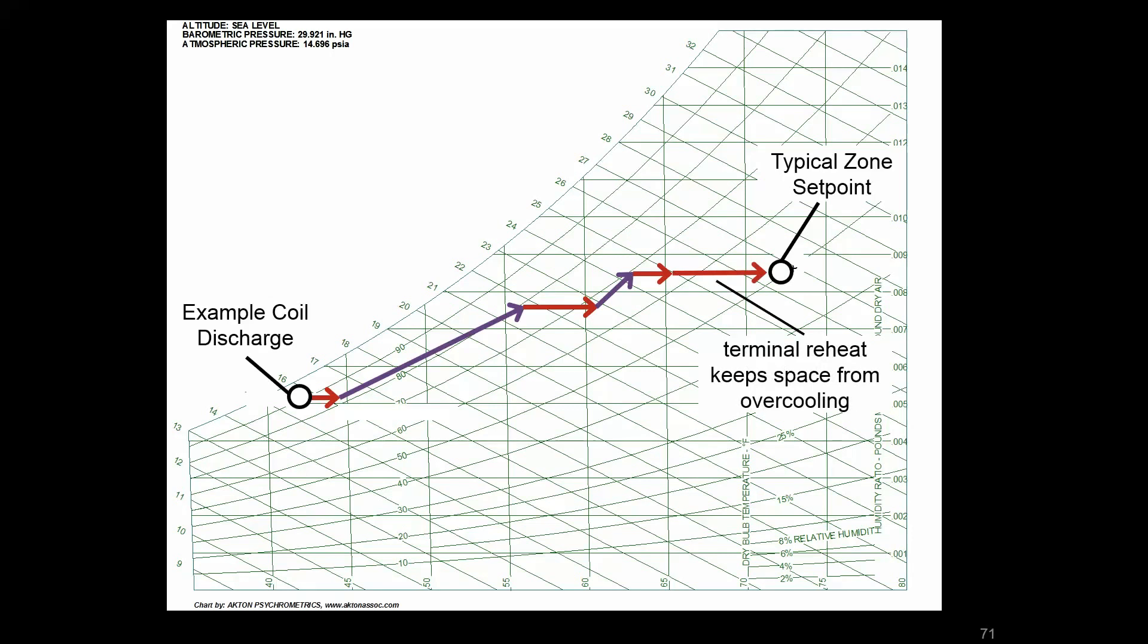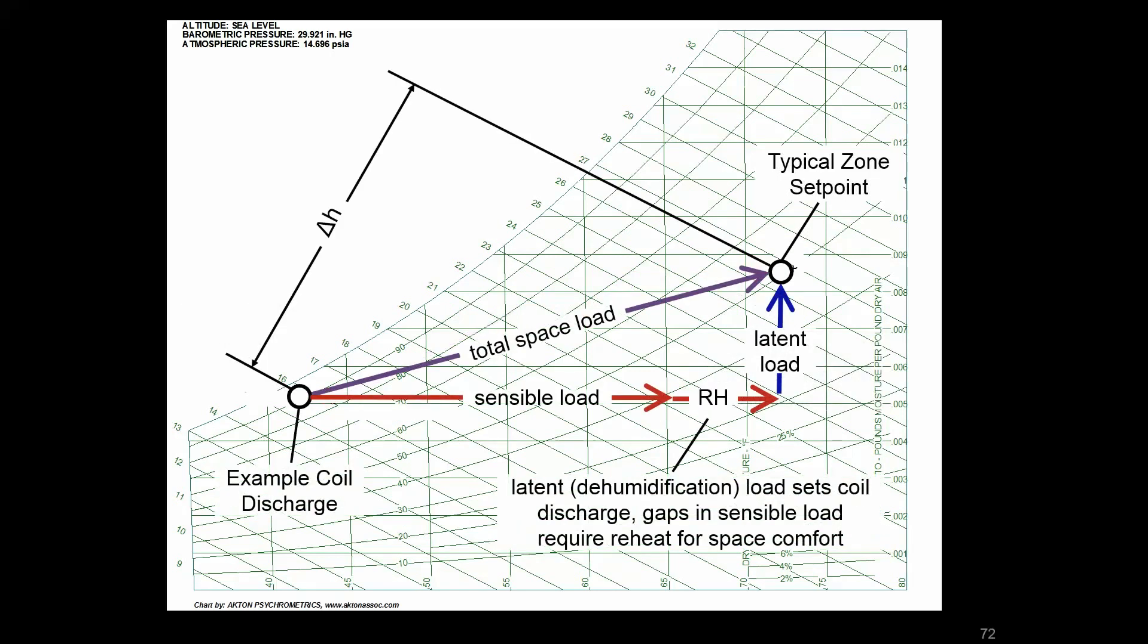Well this is where reheat comes into play. There may be a reheat coil after the cooling coil in the air handler, or there might be a reheat coil above the ceiling just upstream of the ceiling diffuser. The purpose of that is to, once you've met the latent load, keep your space from overcooling. It's a type of simultaneous heating and cooling that in some ways is unavoidable with a system like this that's being driven by a latent load.